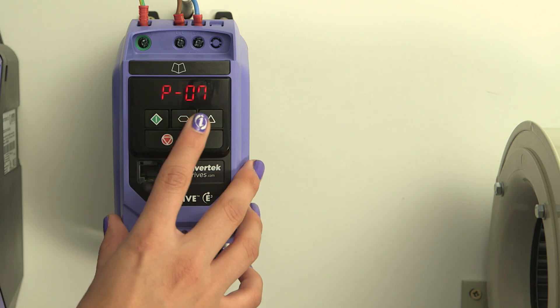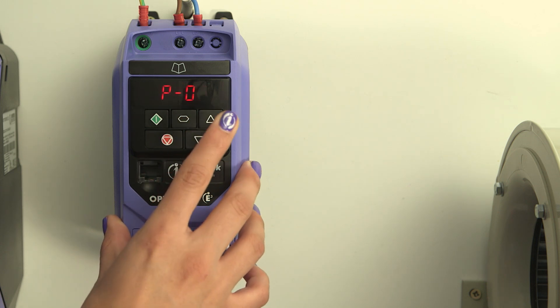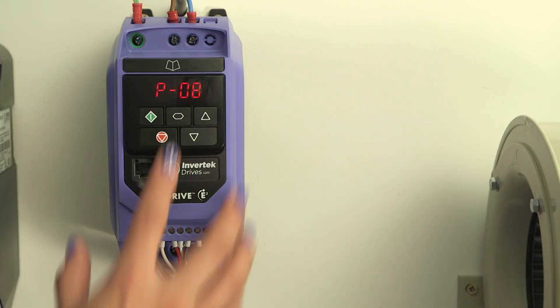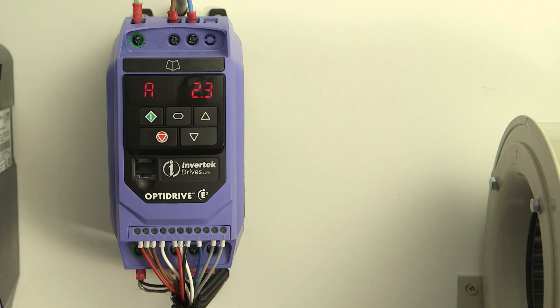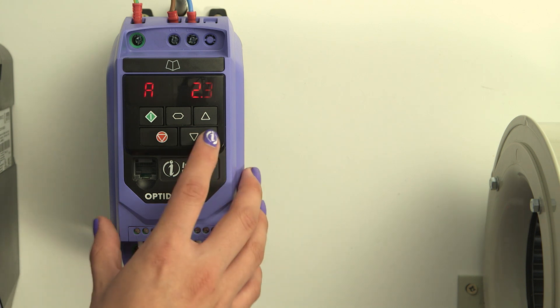Press navigate again and then scroll to the next parameter, parameter 8. This is the motor nominal current IN, which is important for protection. Rating plate says 0.98. Set that using the up and down arrows.